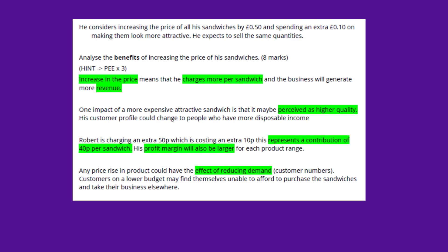There's a hint here — use point, evidence, explain, and you need three examples. I've given a definition at the beginning: an increase in price means he charges more per sandwich and the business will generate more revenue. One impact is that a more expensive, attractive sandwich may be perceived as higher quality, and his customer profile could change to people with more disposable income. Robert is charging an extra 50p and costing an extra 10p, representing a contribution of 40p per sandwich — so his profit margin will be larger for each product range.